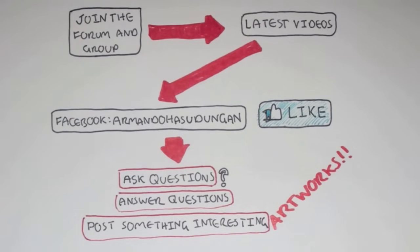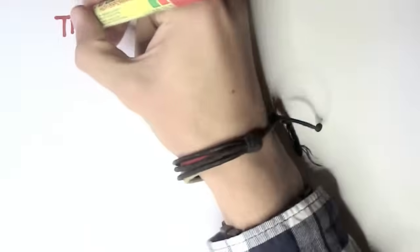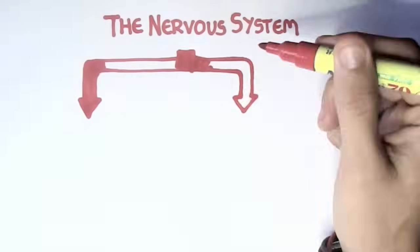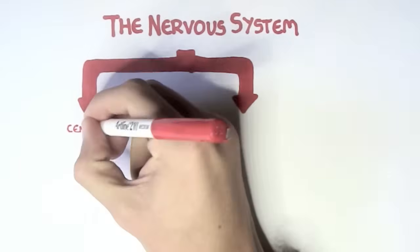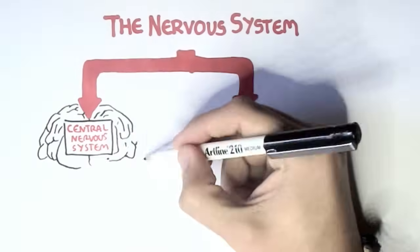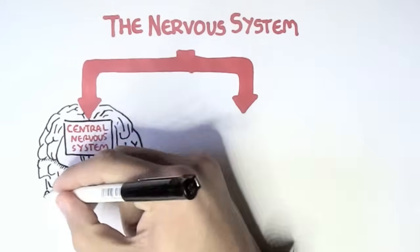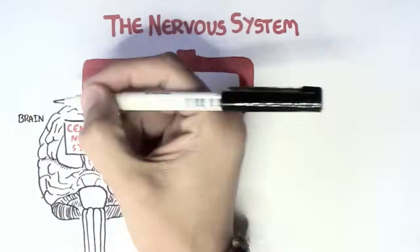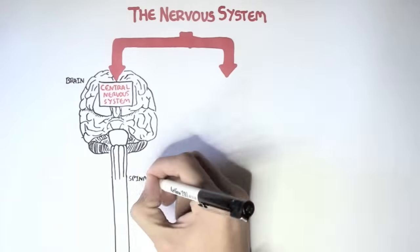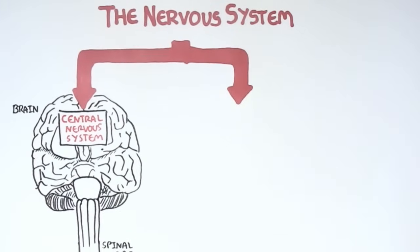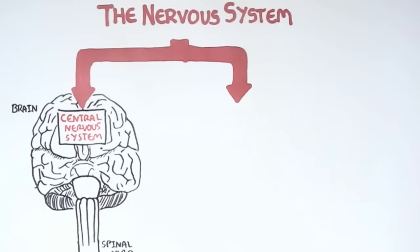In this neurology video we'll look at the divisions of the nervous system. The nervous system is divided into two parts. The central nervous system consists of the brain and spinal cord. This is where all information and signals basically come to, come out from, and also where information can be stored.